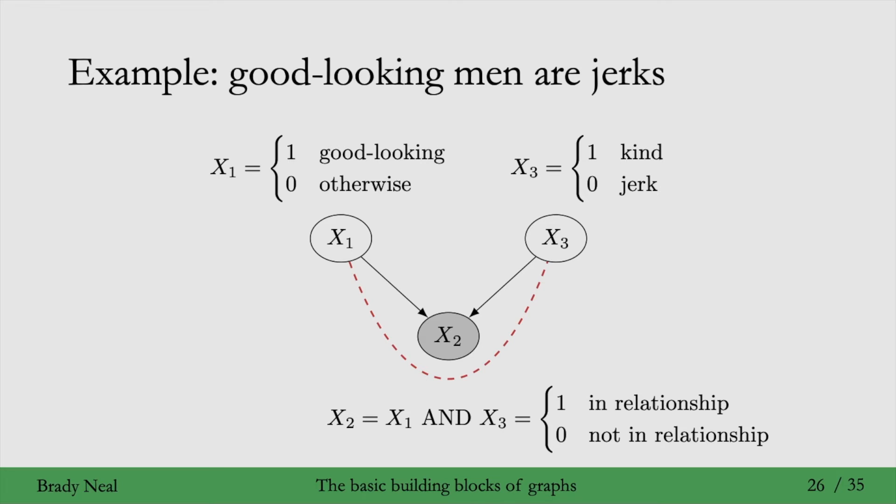In the general population, when we don't condition on x2 at all, then we don't see an association. And I'll give you a graphical picture of that now.